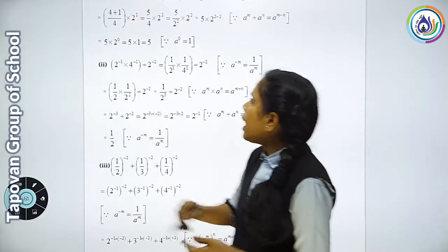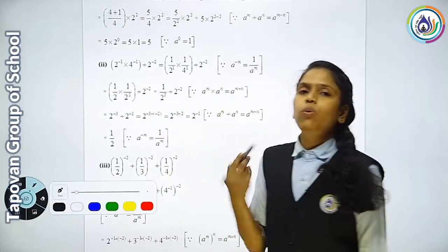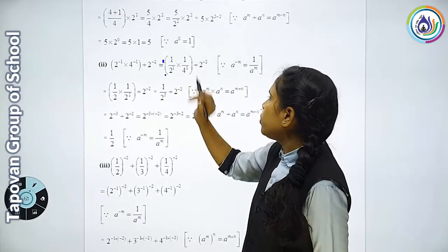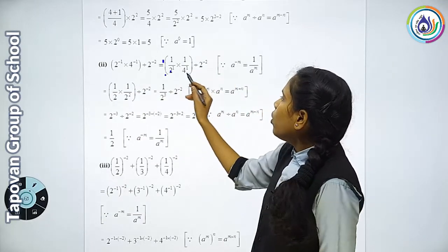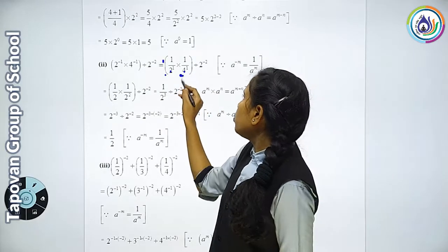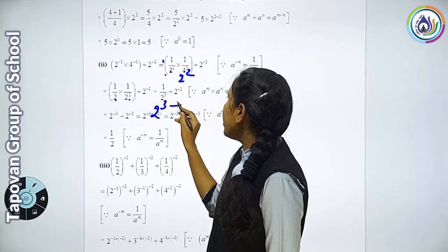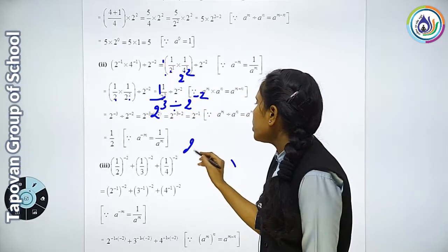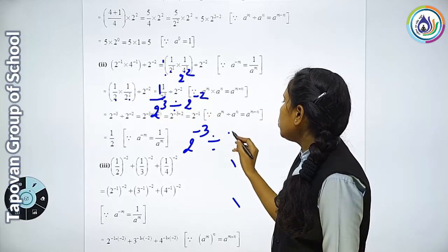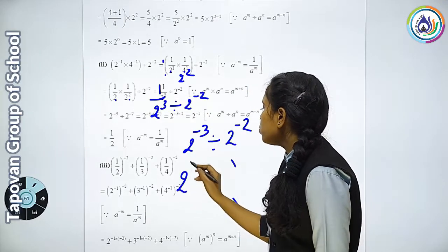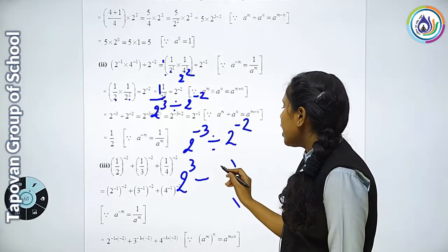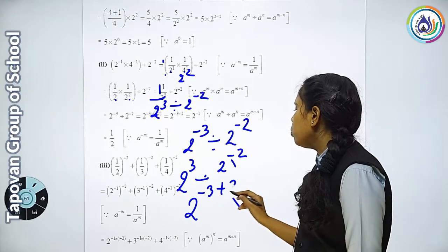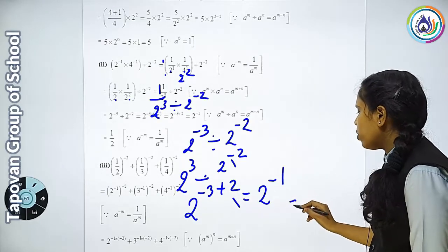Ab baat karte hain question number 2 ki. Yahan phir se power diya: 2 raise to minus 1 into 4 raise to minus 1 divide by 2 raise to minus 2. To pehle sabko plus mein kar lete hain. Ab plus mein divide by 2 raise to minus 2. Ab kya hoga? Jo 4 raise to 1 hai usko 2 kar dete hain: 2 raise to square. To yahan hoga 2 raise to 3 divide by 2 raise to minus 2. Ab yahan upar jayega to kya ho jayega? Minus. Yaani 2 raise to minus 3, yahan upar gaya to minus. Divide mein kya hota hai? Minus. Minus minus plus. To kitna ho jayega? Minus 3 plus 2, yaani 2 raise to minus 1, yaani 1 upon 2.